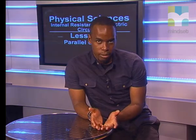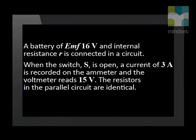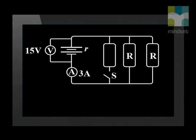Here is our question. A battery of EMF 16 volts and internal resistance r is connected in a circuit. When the switch S is open, a current of 3 ampere is recorded on the ammeter and the voltmeter reads 15 volt. The resistors in the parallel circuit are identical. So here is our circuit diagram.